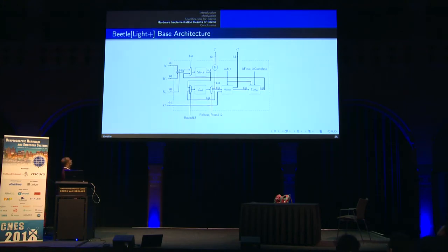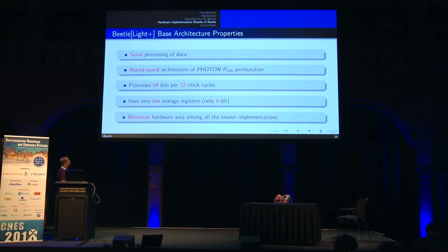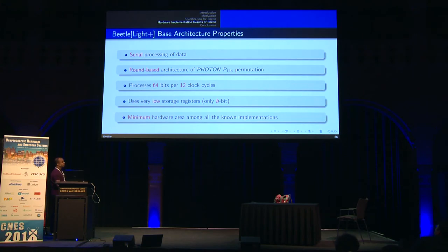The base architecture for Beetle-Light+ — same structure applies for Beetle-Secure+ except the data path length — uses one state register of size 144 and three modules in a round-based implementation. The F-round module is one round of the F permutation, the ρ-comp is the linear combiner, and con-XOR is the constant addition. It does serial processing of data with a round-based architecture of the Photon P144 permutation, processing a 64-bit block per 12 clock cycles, using only a b-bit storage register — achieving minimum hardware area among all known implementations.